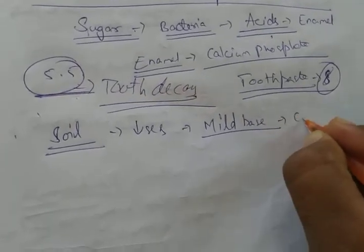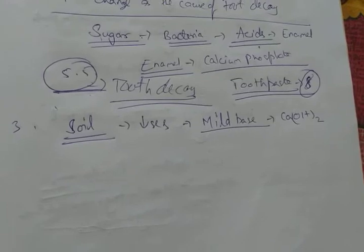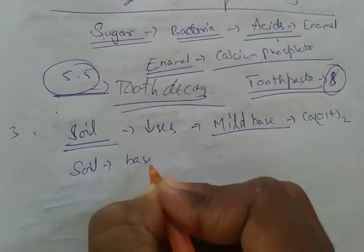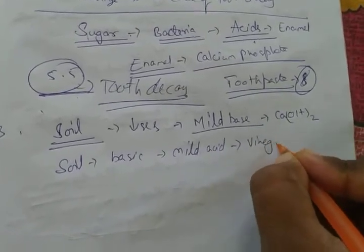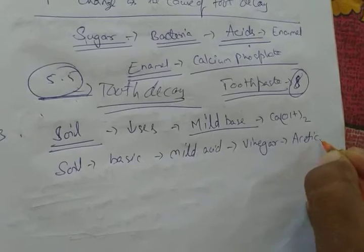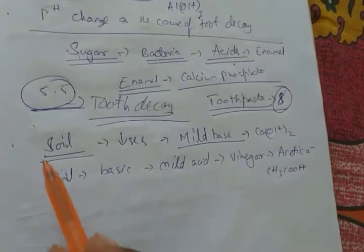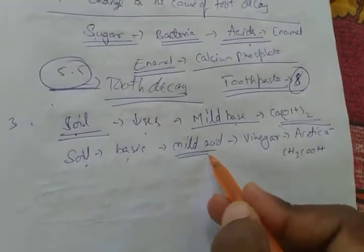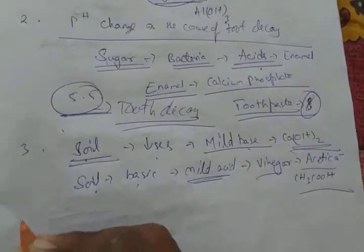We may use calcium hydroxide. If the soil has become acidic, we use a mild base. If the soil has become basic, we will use a mild acid.